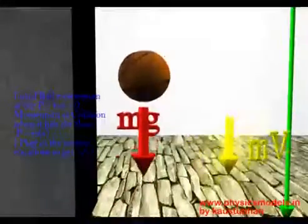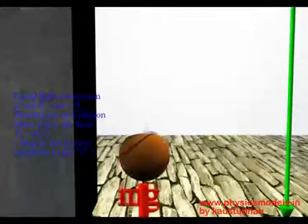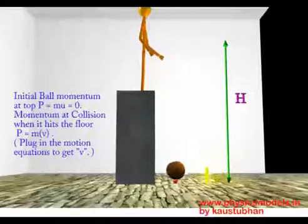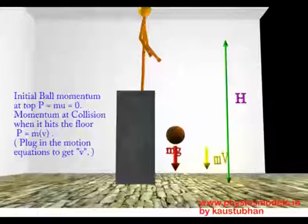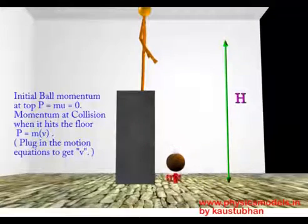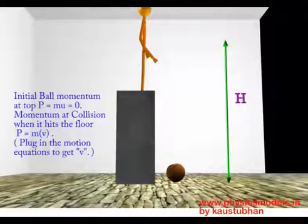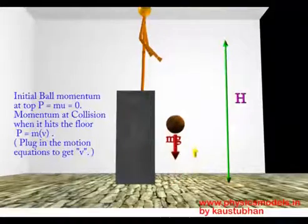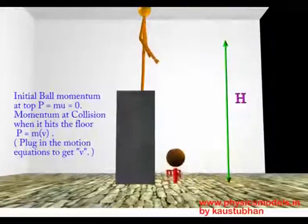So let's look at the vectors once again, the favorite vectors. The Mg is the weight of the ball acting downwards shown by a red arrow and the yellow arrow this time shows the momentum of the ball. Momentum is mass into velocity. It's a property of the mass.